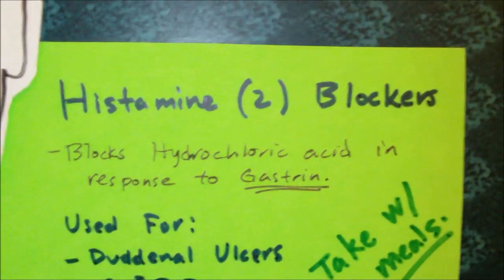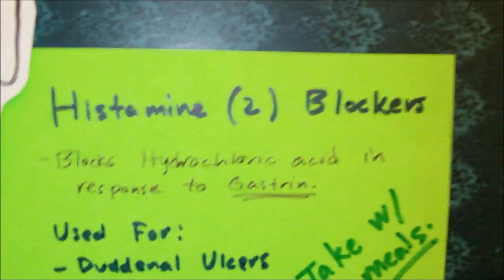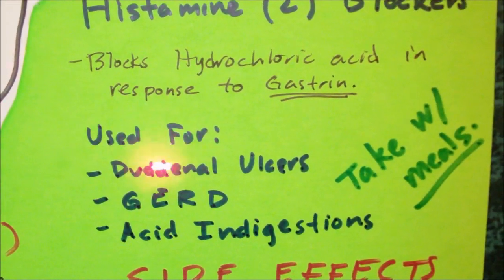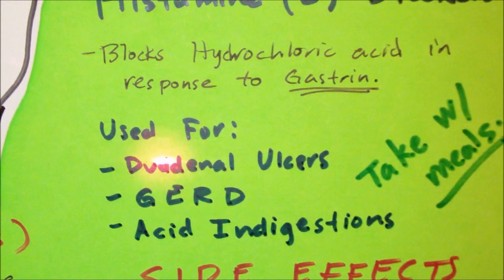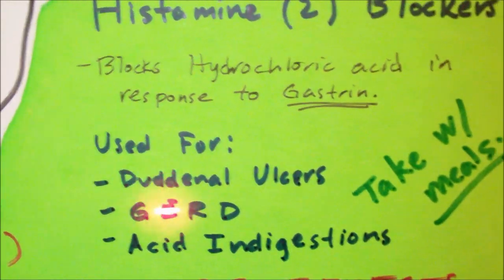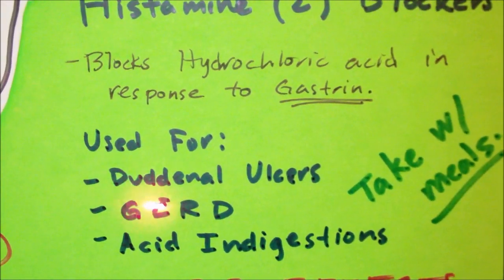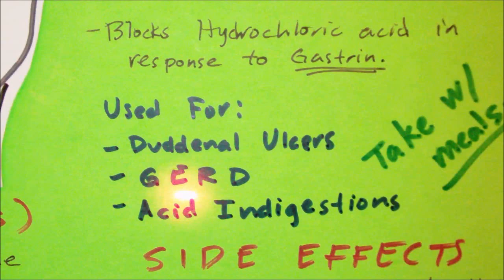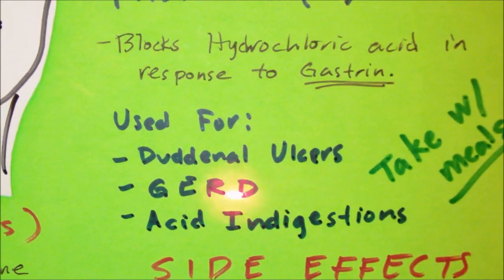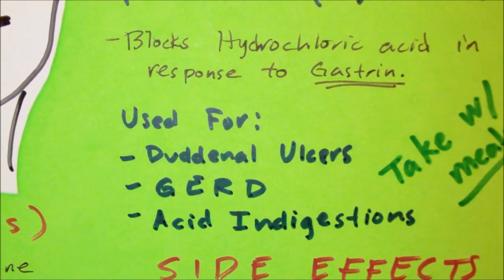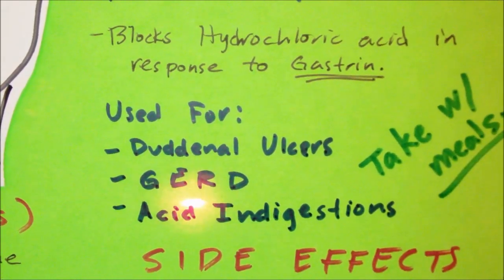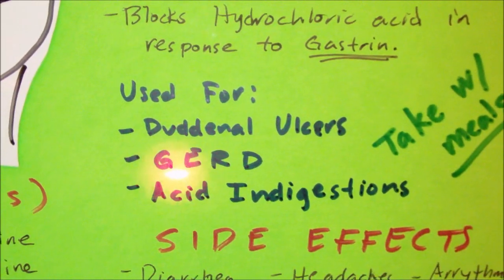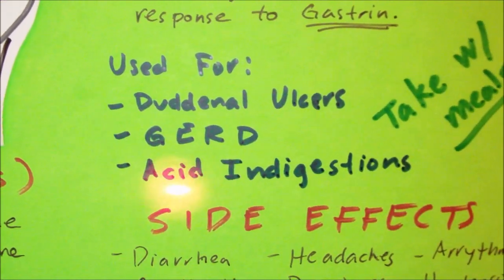These drugs are usually used as a treatment for duodenal ulcers. They can also be used as a prevention for stress-induced ulcers and maybe acute GI bleeding. They are also used as a treatment for GERD or reflux disease, and can be used to relieve symptoms of acid indigestion.